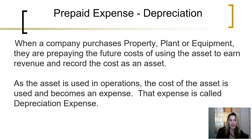Another prepaid expense adjustment we need to look at is depreciation. When a company purchases property, plant, and equipment, they are purchasing assets that they intend to hold onto for the long term. Essentially, what they are doing is prepaying the future costs of using that property, plant, and equipment. Thus, when they purchase the asset, it is recorded as an asset in the general ledger. As that asset is used in operations over its life, the cost of the asset needs to be recorded as an expense.